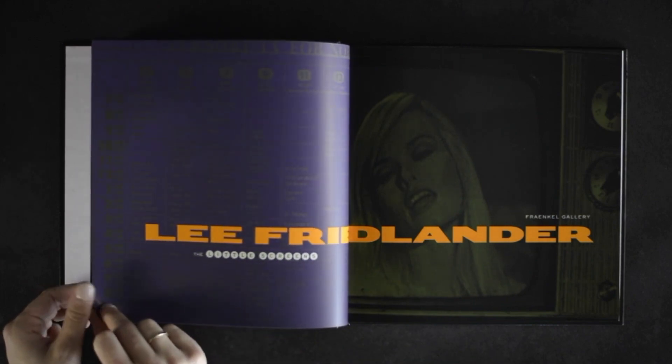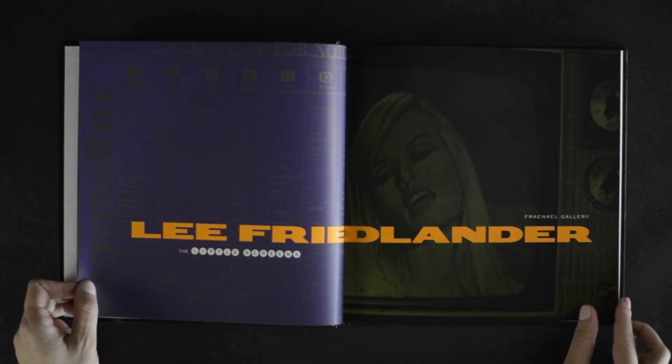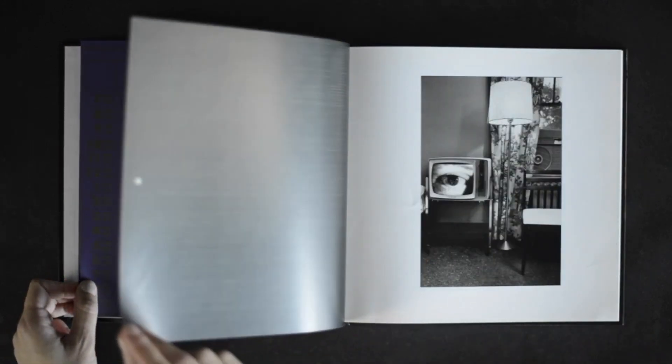He described Friedlander's pictures as deft, witty, spanking little poems of hate.